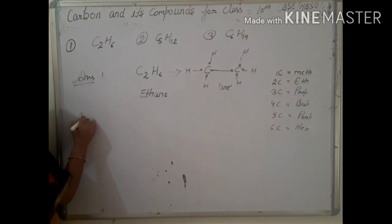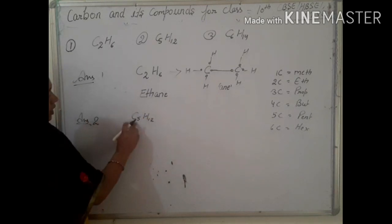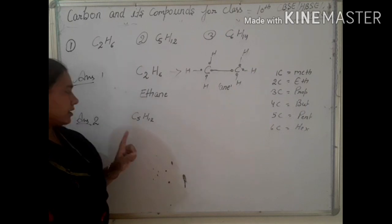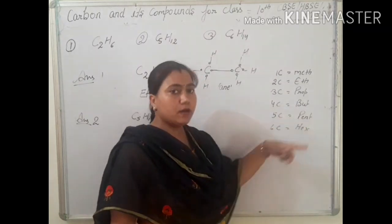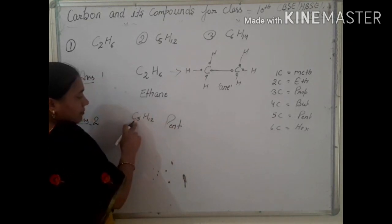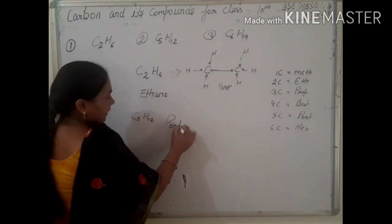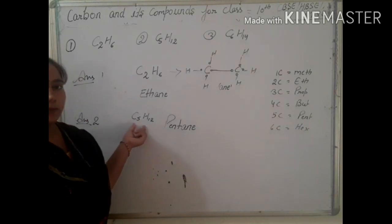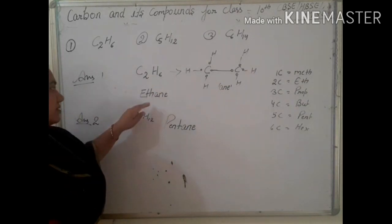Next is C5H12. First we count the carbon atoms — there are five carbon atoms, so we use the stem 'pent.' Each carbon atom has single bonds, so we add '-ane.' The IUPAC name of C5H12 is pentane. And we already established that C2H6 is ethane.